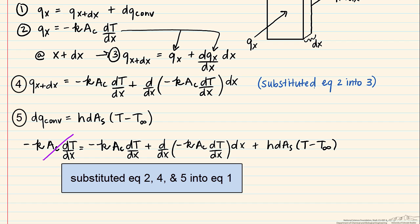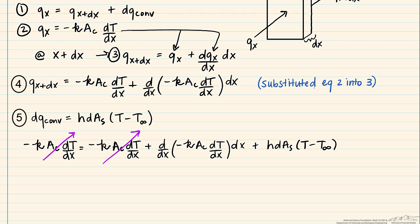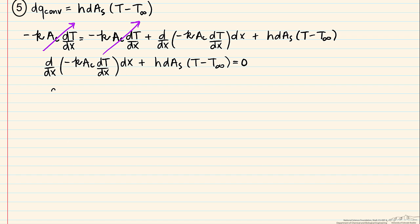And if you notice that q of x cancels out, we can rewrite this as ddx a sub c dt dx times dx, and I divide it through by our k, so this is minus h divided by k, dA sub s, t minus t infinity, and this is going to equal 0.